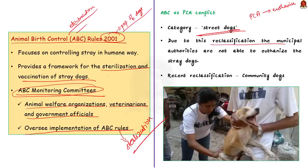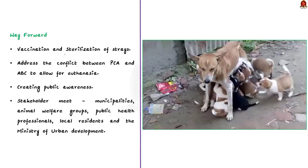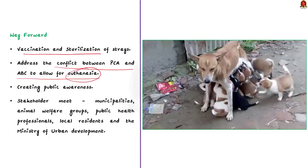Very recently, street dogs in the ABC rulebook were again renamed as 'community dogs.' To address this issue: vaccination and sterilization drives must be carried out; the conflict between ABC rules and PCA Act must be resolved so that old, sick, and rabid stray dogs can be euthanized; and the public must be made aware of the issue. To all the dog lovers out there — if you love dogs, take it to your home. If you just feed stray dogs, you are doing a disservice to both the dog and the public.